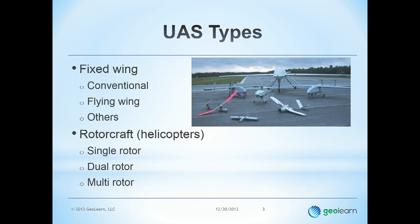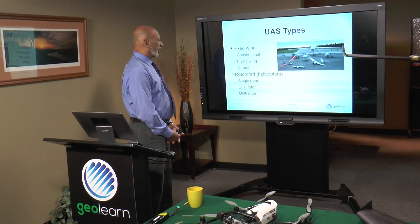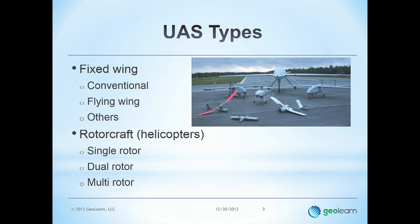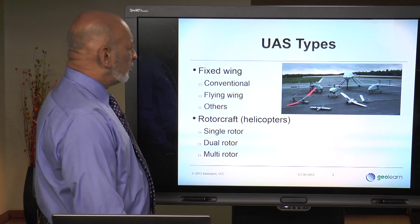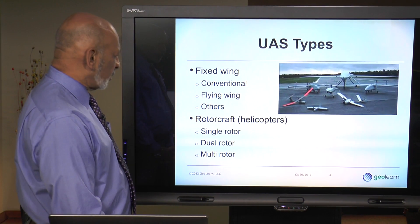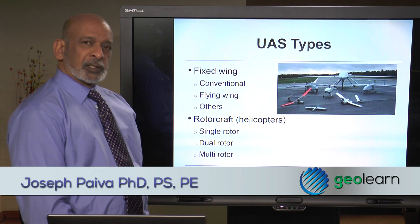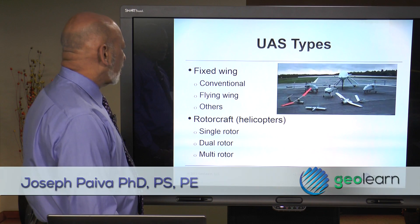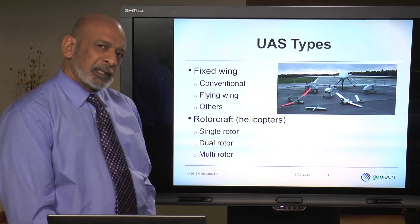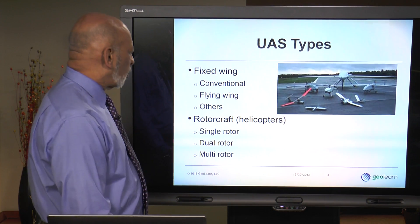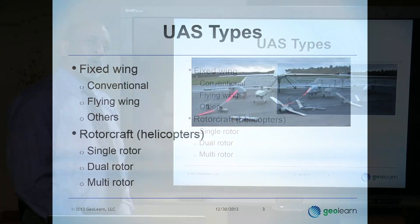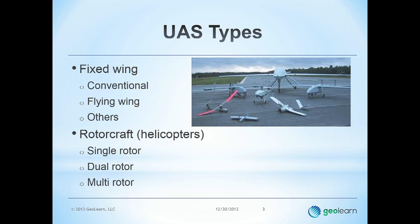On my list, I've broken down two primary categories: what I call conventional configuration for fixed-wing and then flying-wing configuration. The two fixed-wing aircraft here in the studio are both considered flying wings — they don't have the normal tail, rudder, and elevator that conventional aircraft have. With the rotorcraft, they are better called rotorcraft, and pretty much all that we concentrate on for geospatial applications are what we call multi-rotor craft.